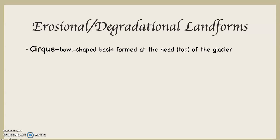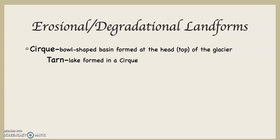The first landform is a cirque. Because the glaciologist who originally studied this was from western Switzerland, a lot of the terminology is French. A cirque is a bowl-shaped basin formed at the head — the top — of an alpine glacier. Bowl-shaped like a cereal bowl or soup bowl, so it's concave. The head is the highest point in the mountains where the glacier originated. Because a cirque is bowl-shaped, after glaciers are gone and precipitation happens, a lake can form in this basin. We call that type of lake a tarn.